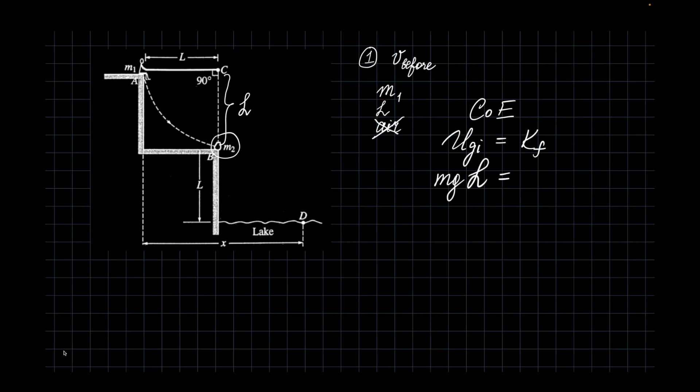MGL for H equals mv squared over 2. Mass cancels. Therefore, V right before the collision is the root of 2gh. 2gl for that matter.